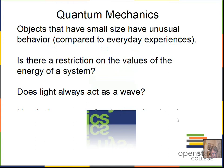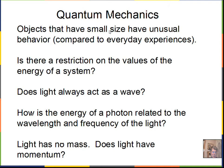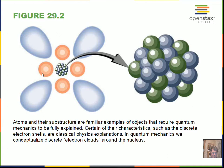Quantum mechanics will again produce strange results at small size scales. We'll find that not all possible energies are allowed — energy comes in packages, which is the core quantum idea. Light will not always act as a wave, and there's a connection between energy and frequency. Also, light doesn't have mass but does possess momentum — some of these ideas developed in the 1920s.